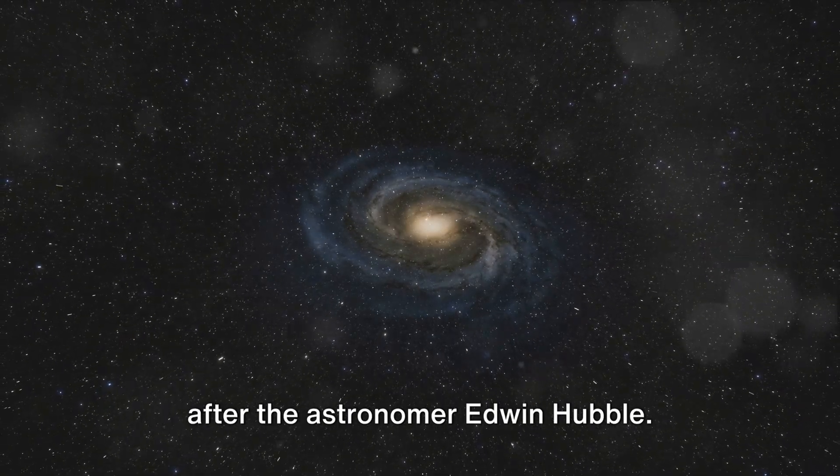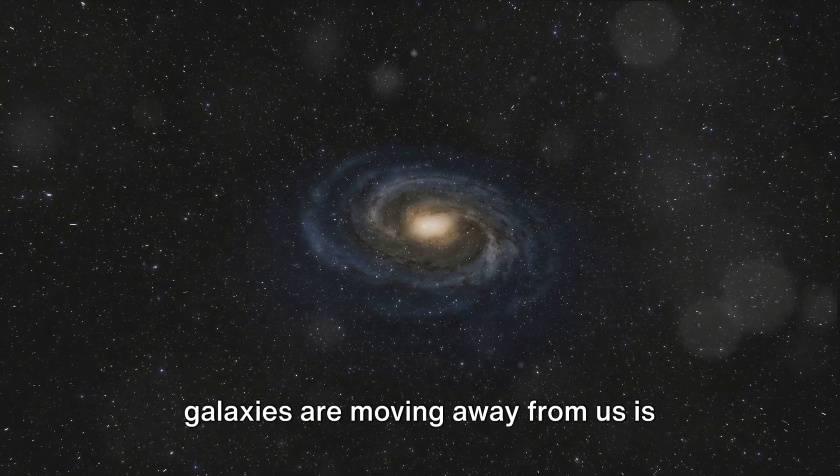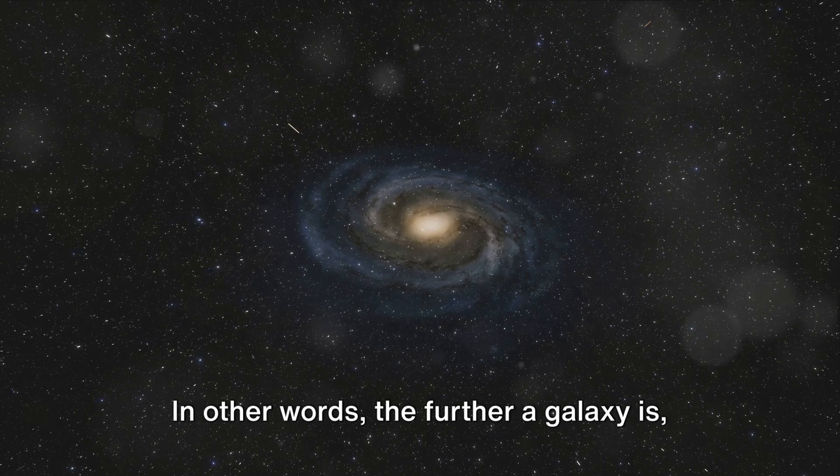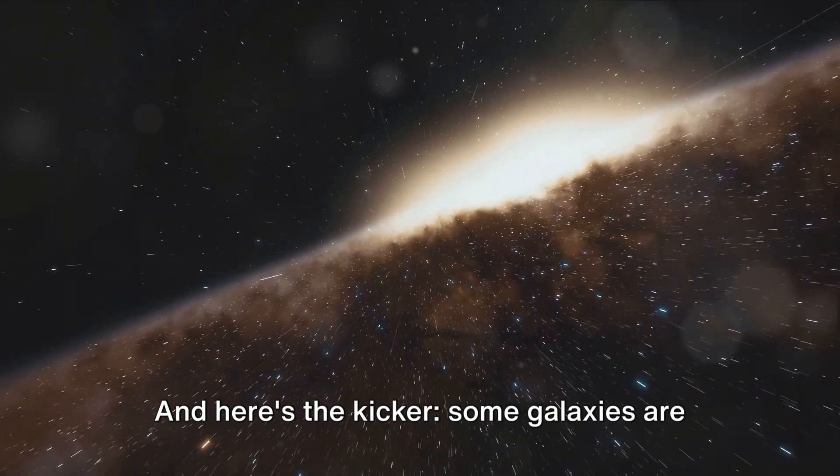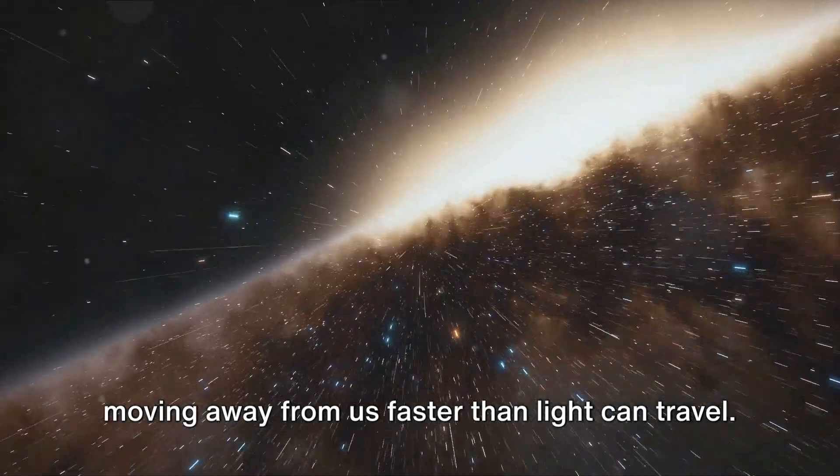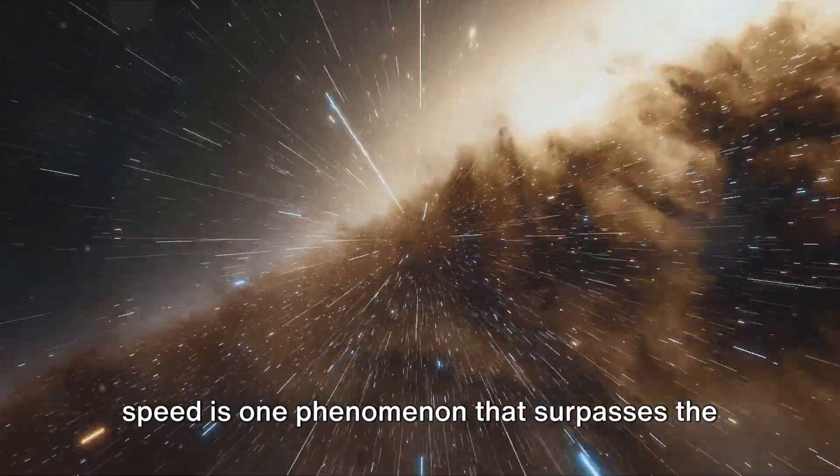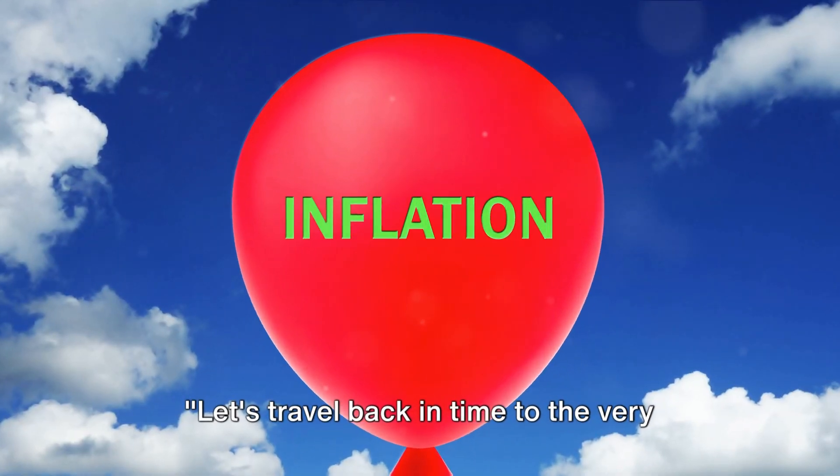This brings us to Hubble's law, named after the astronomer Edwin Hubble. He discovered that the speed at which galaxies are moving away from us is proportional to their distance. In other words, the further a galaxy is, the faster it's receding. And here's the kicker: Some galaxies are moving away from us faster than light can travel. That's right. The universe's expansion speed is one phenomenon that surpasses the speed of light.